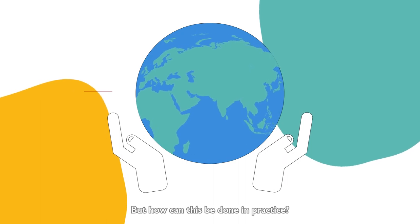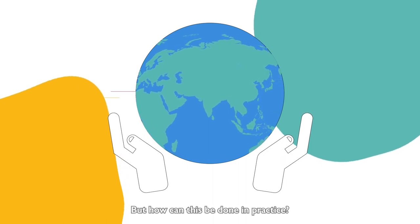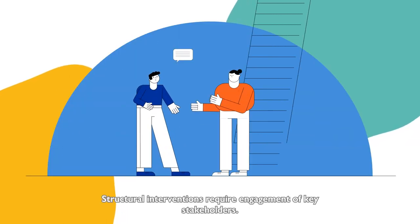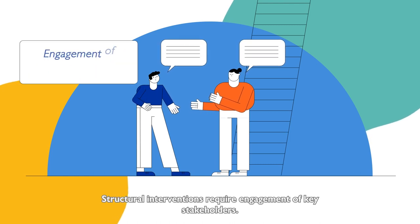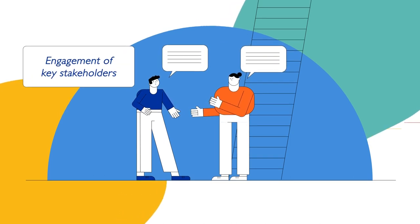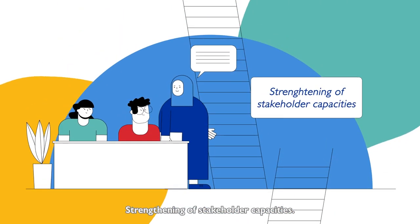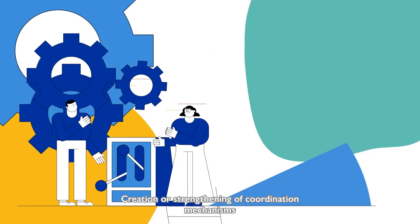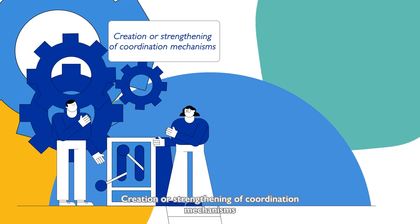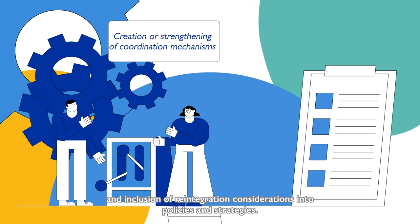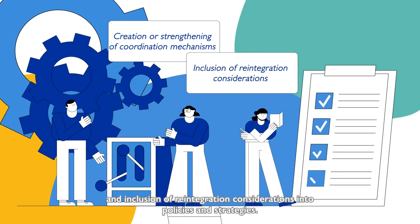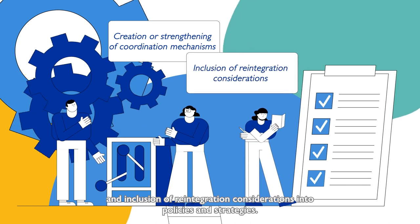But how can this be done in practice? Structural interventions require engagement of key stakeholders, strengthening of stakeholder capacities, creation or strengthening of coordination mechanisms, and inclusion of reintegration considerations into policies and strategies.